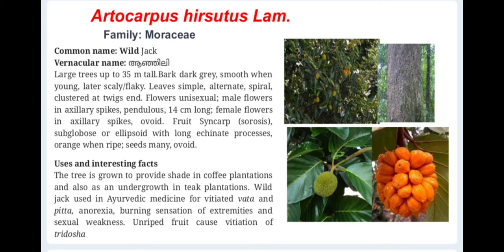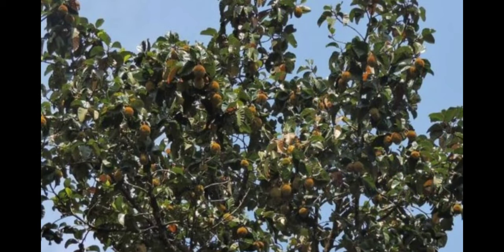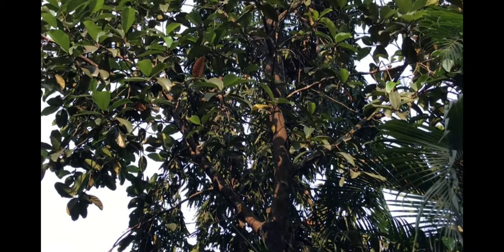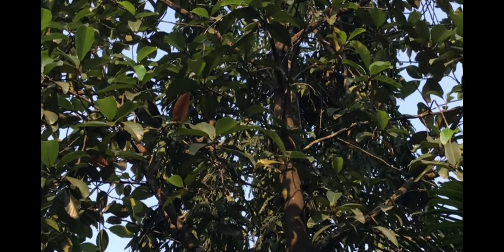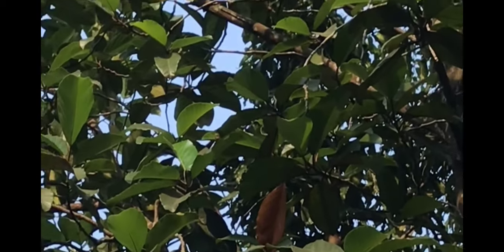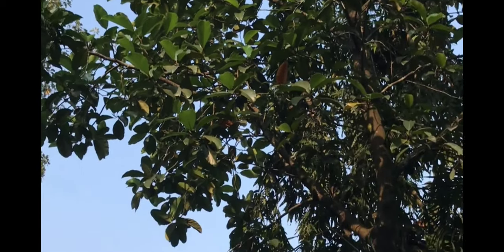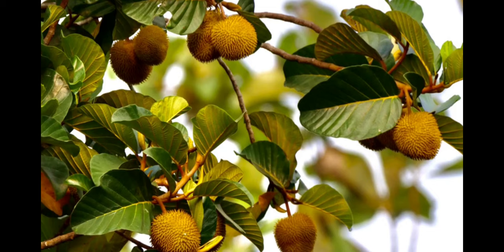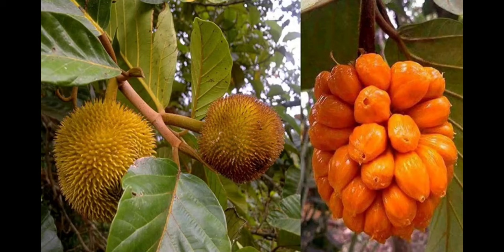Artocarpus hirsutus, family Moraceae. Common name is wild jack and vernacular name is Aanjili. They are large trees with dark gray bark that is smooth when young and later turns scaly or flaky. Leaves are simple, alternate, and spiral, clustered at twig ends. Fruits are subglobose with long echinate processes, orange when ripe, with many ovoid seeds. Wild jack trees are used in Ayurvedic medicine for vitiated vata and pitta, anorexia, burning sensation of extremities and sexual weakness.